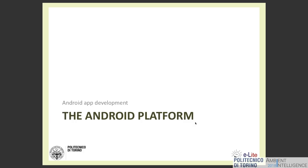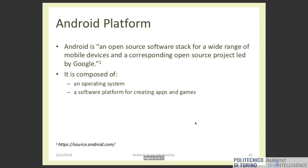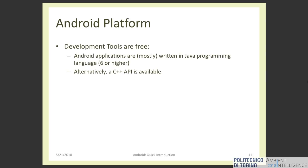Now let's look at the Android platform. The name platform is very important because Android is not only an operating system — it's an open source software stack for a wide range of mobile devices, and a corresponding open source project led by Google. So there is the operating system, but there are also tools for creating apps and games. Another important thing about Android is that development tools are free, so you can download them and start developing applications.